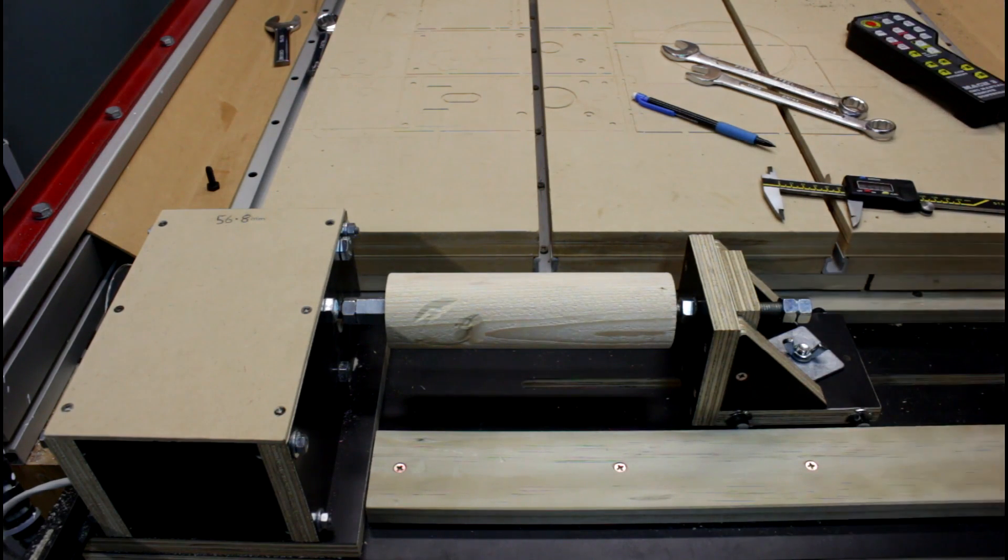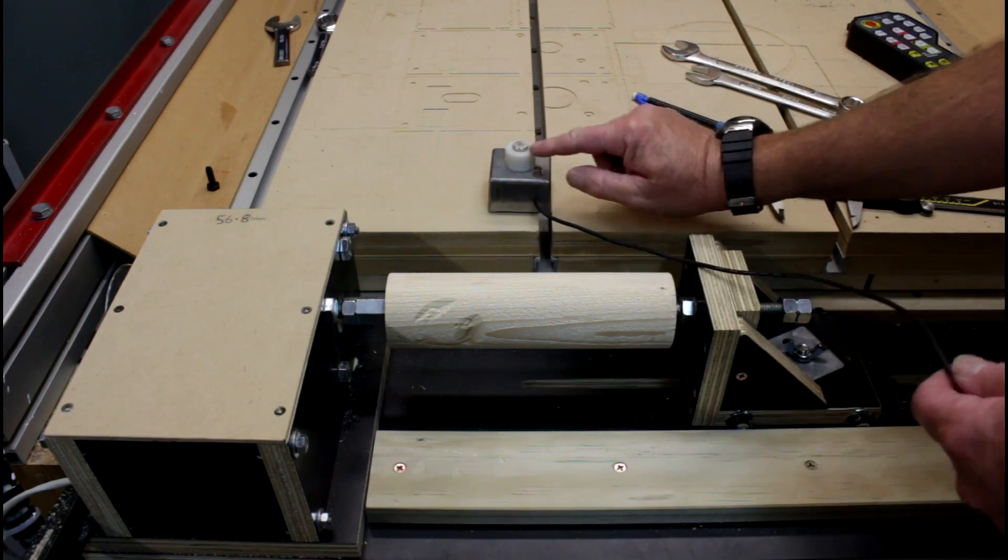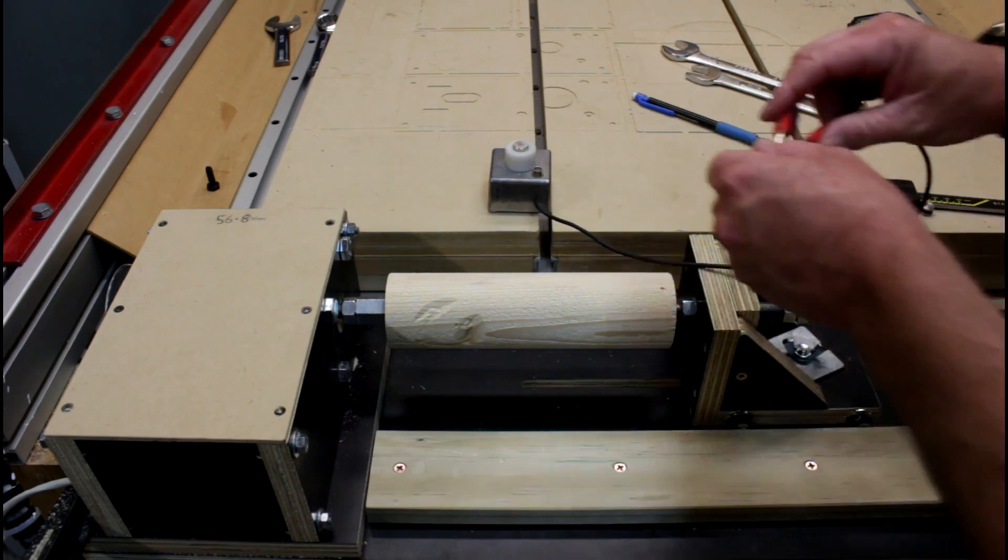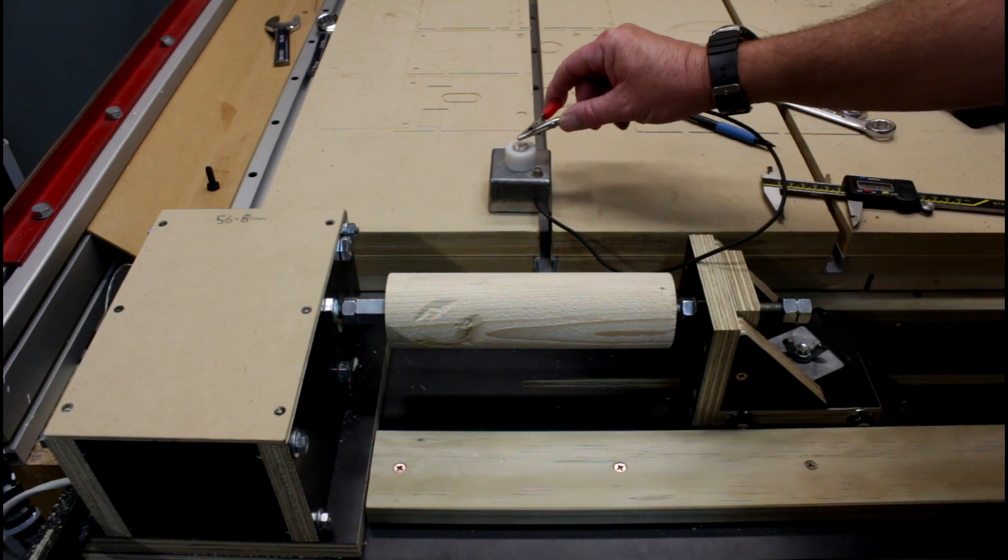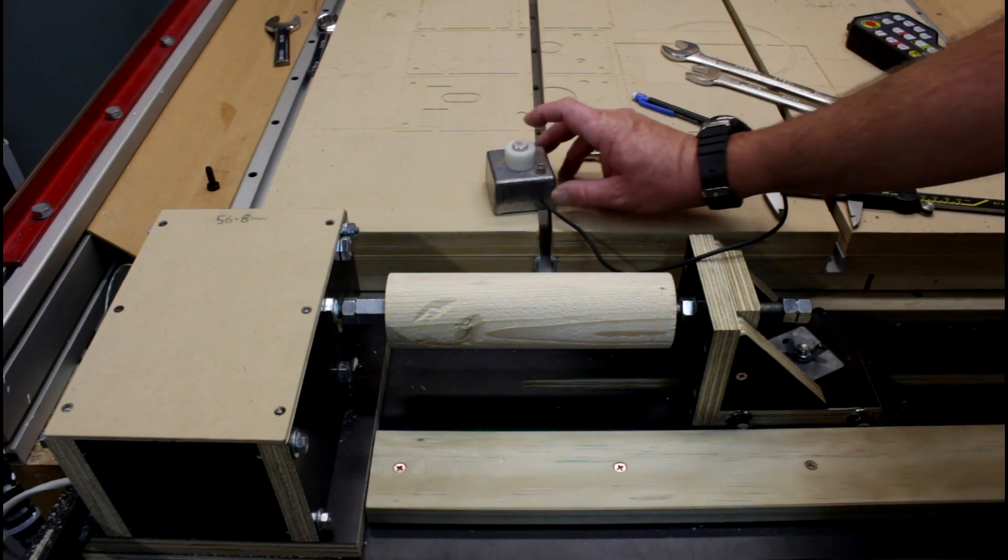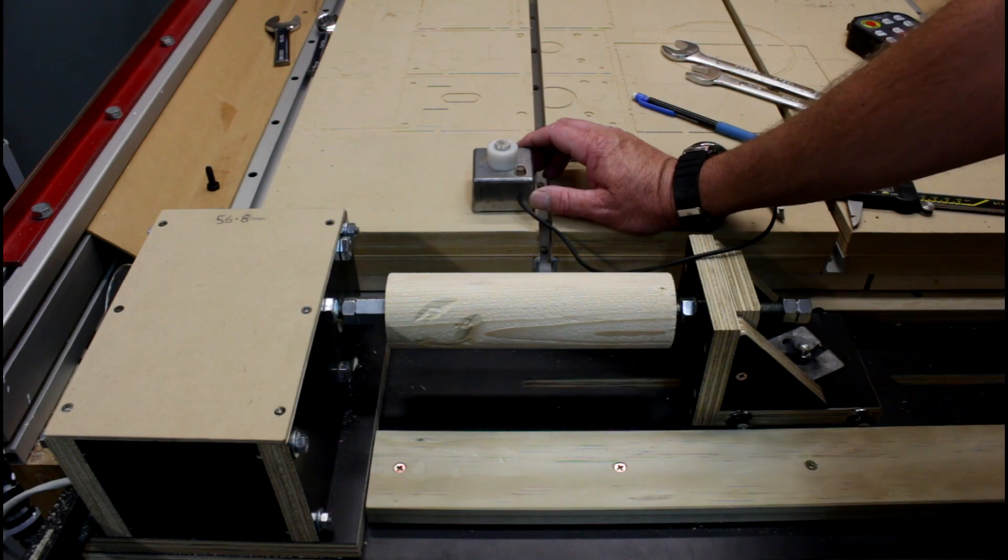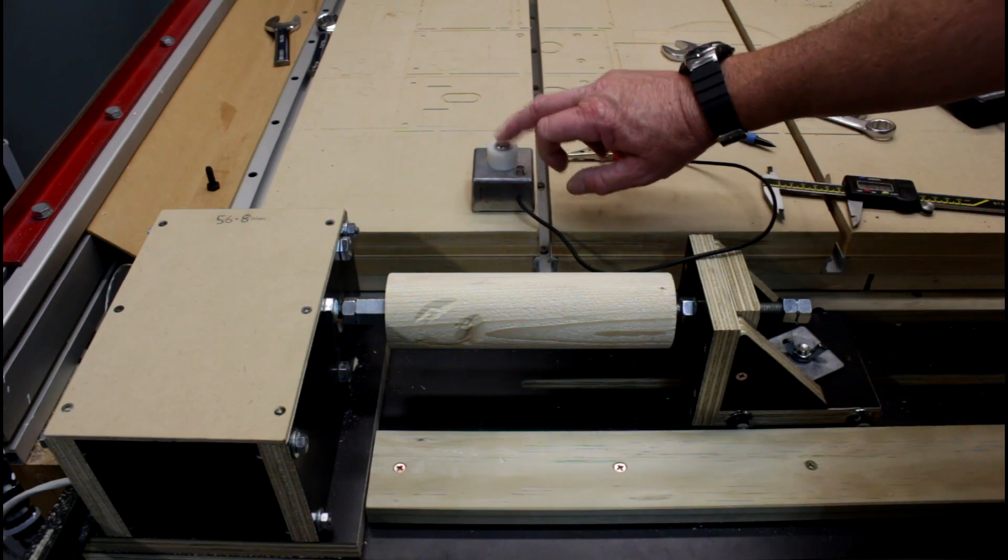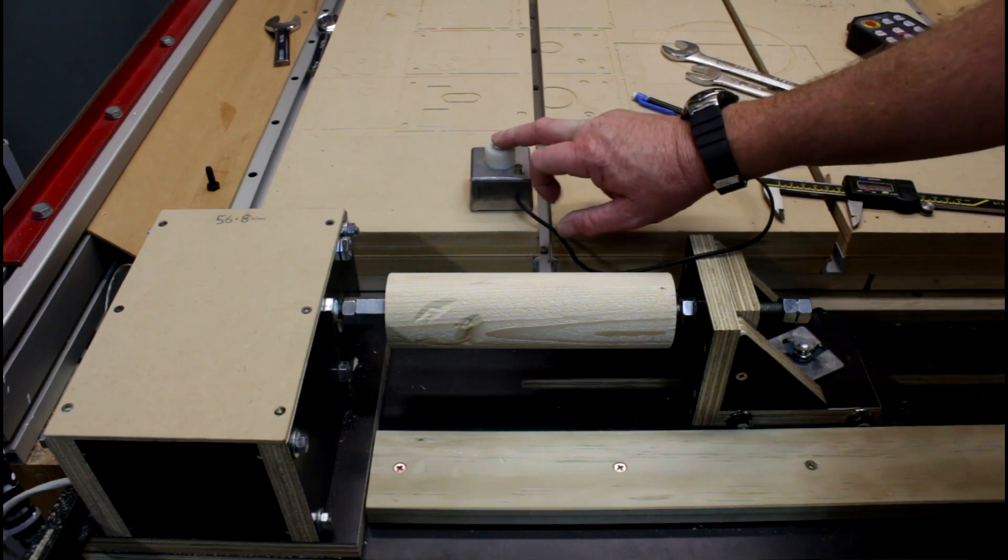what I did, is I got my Z cutter height, and brought the cutter down until the light turned on, and I got a measurement of 56.8 millimeters. So I know that if I zero any cutter to the top of this on my table,